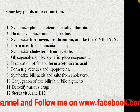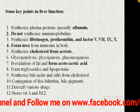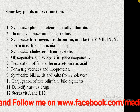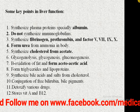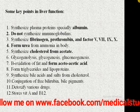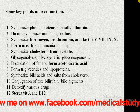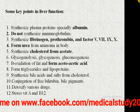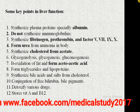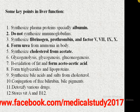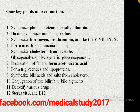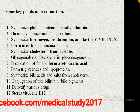The liver synthesizes plasma proteins, mainly albumin — remember it does not synthesize immunoglobulins. Other proteins include fibrinogen, prothrombin, and clotting factors 5, 7, 9, and 10. MCQs may ask which factors are produced by the liver, or which factor is not produced by the liver — so remember factors 5, 7, 9, and 10 are synthesized in the liver.